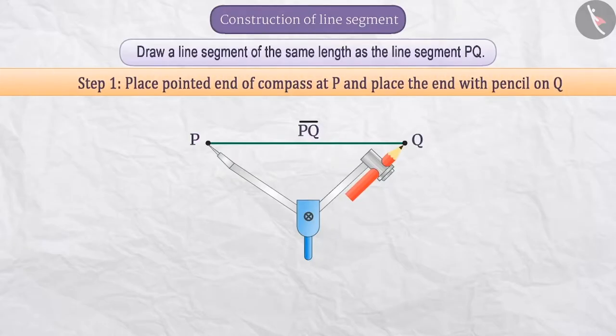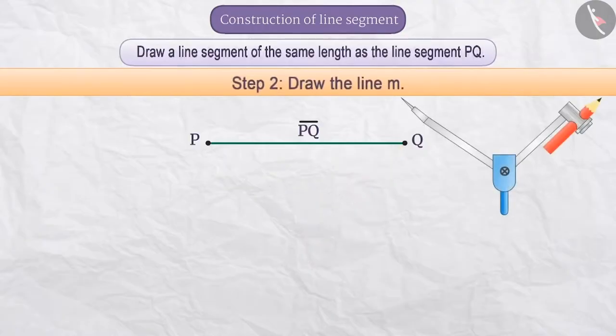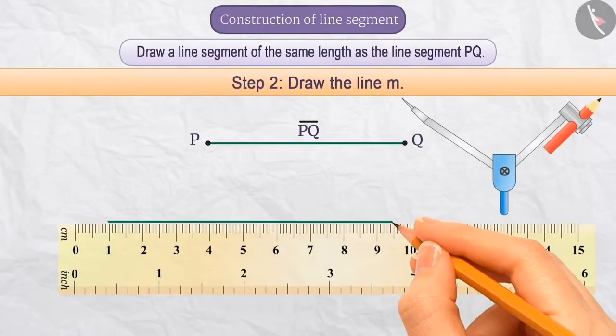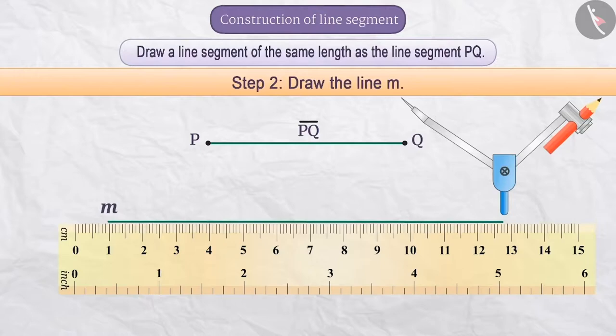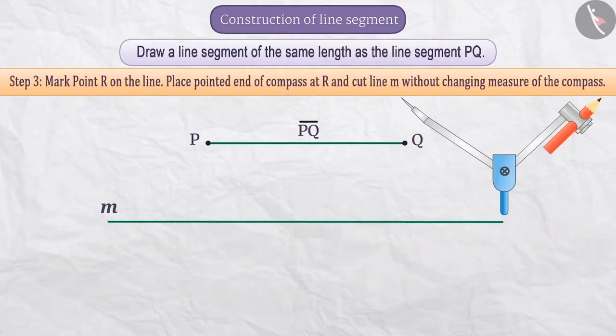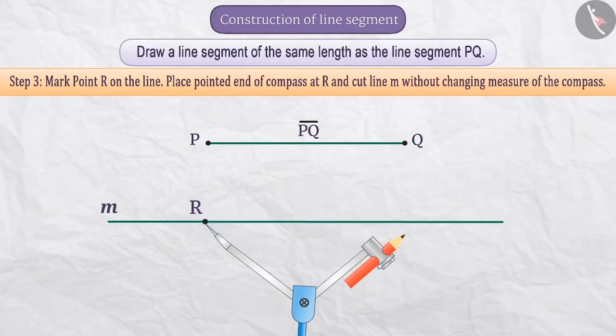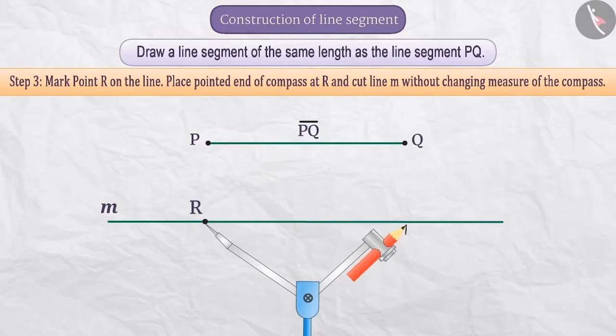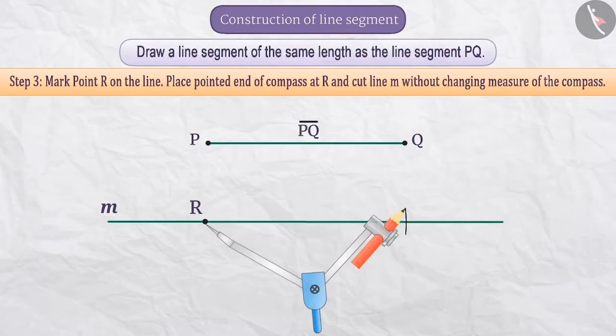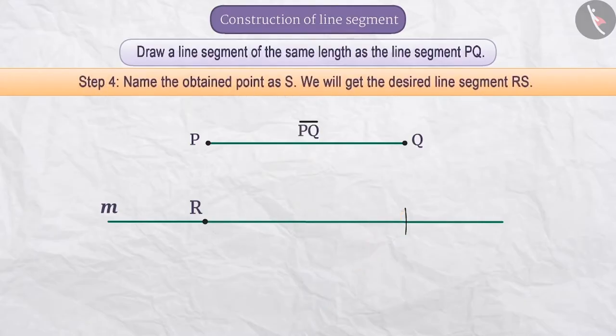Step 2: Then we will draw a line which will be named M. Step 3: On the line M, we will take a point named point R. We will place the pointed end of the compass at point R and without changing the measure of the compass, draw an arc on the line M.